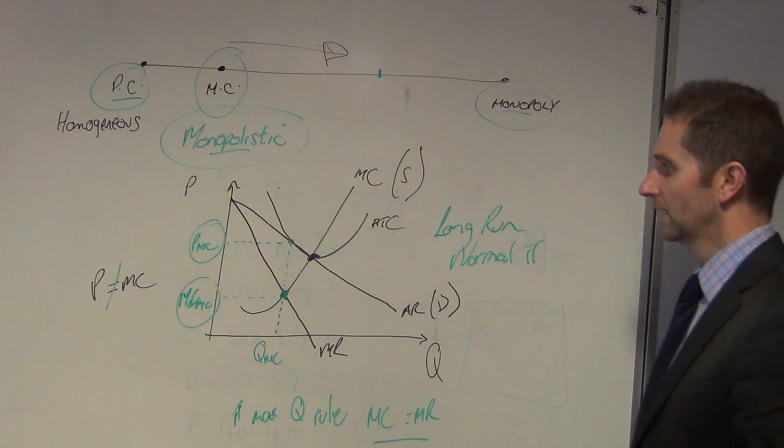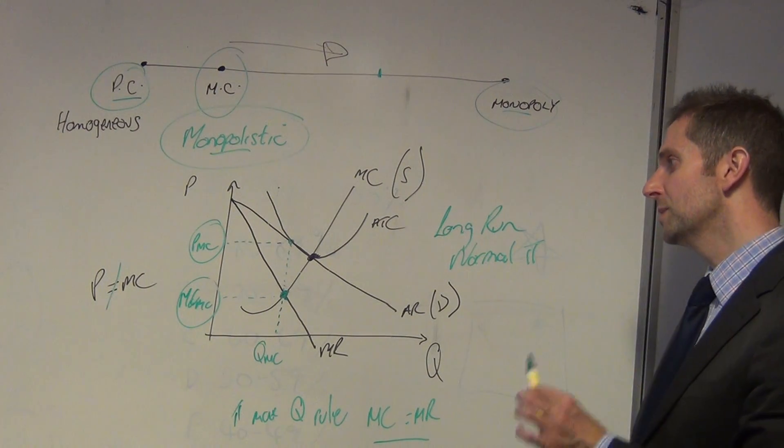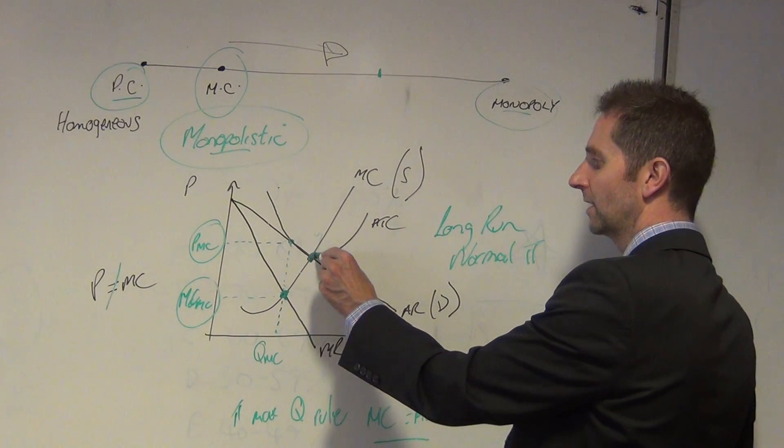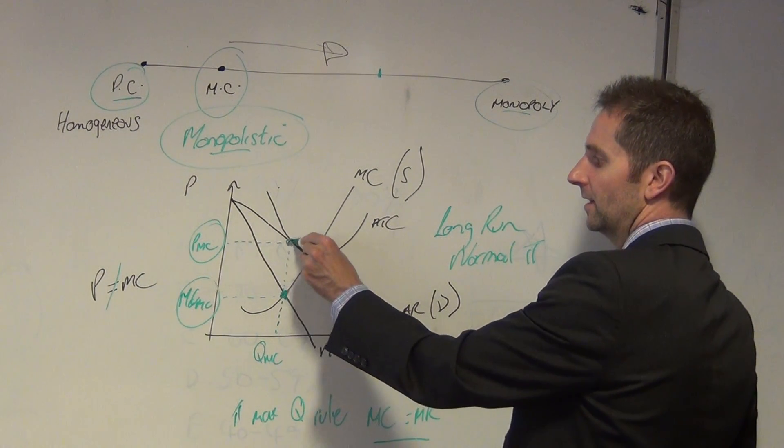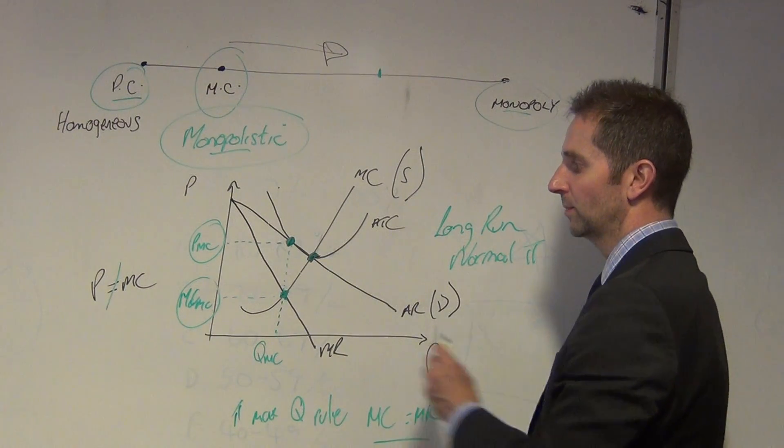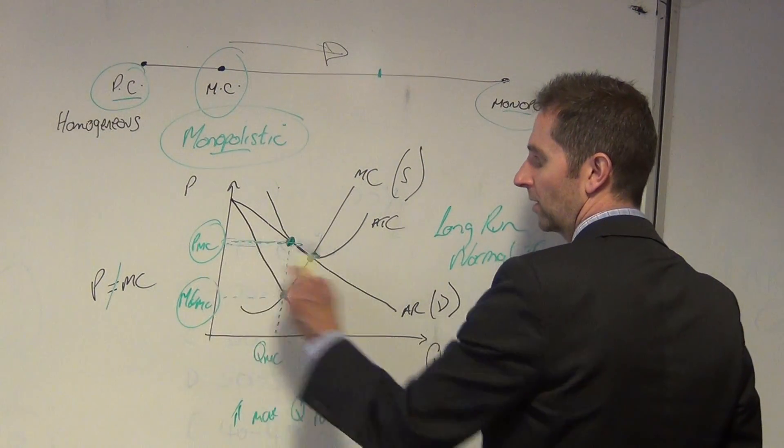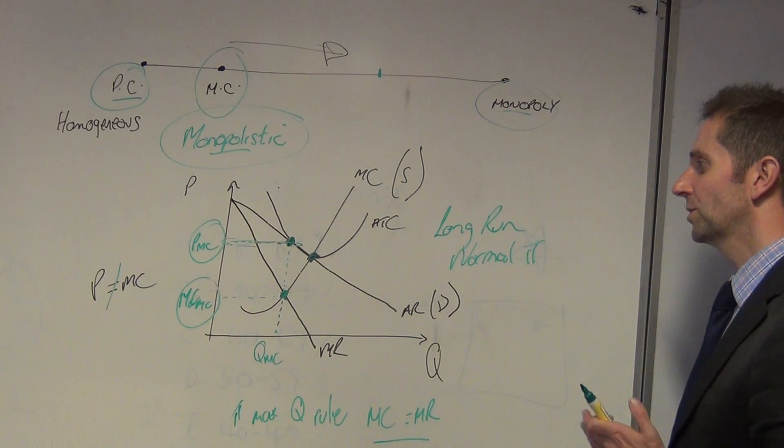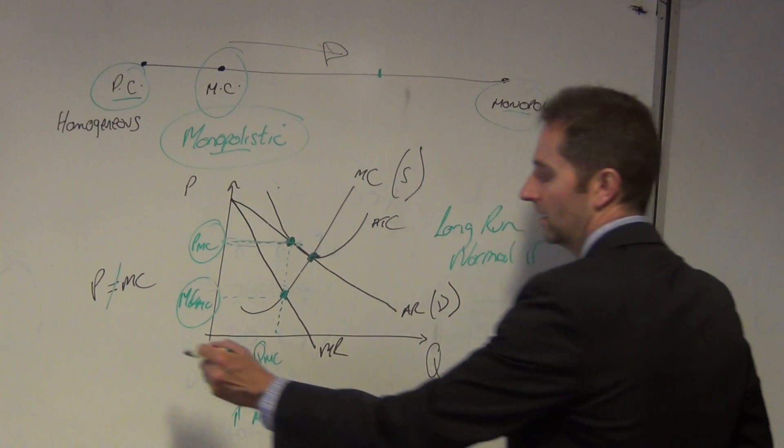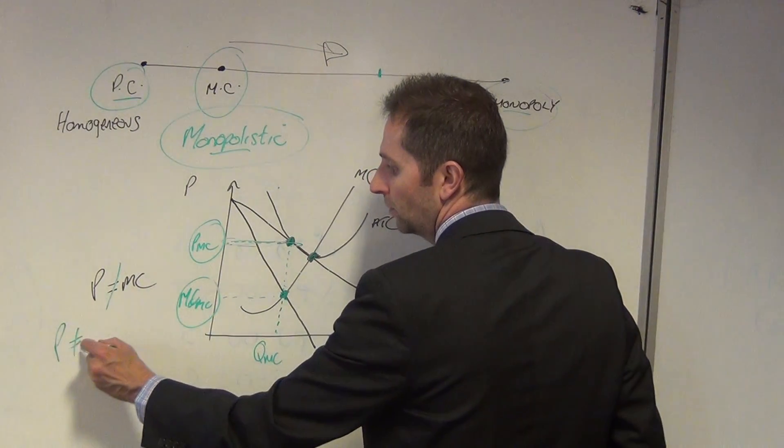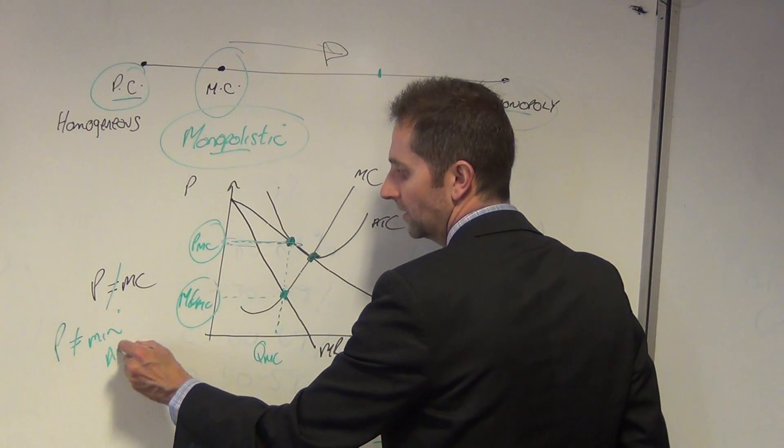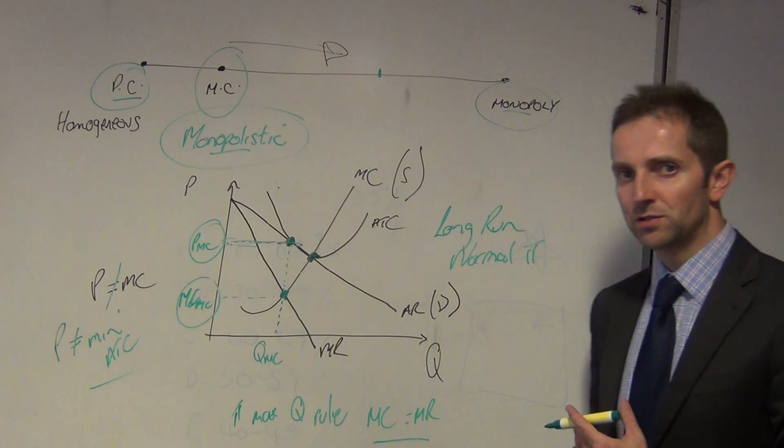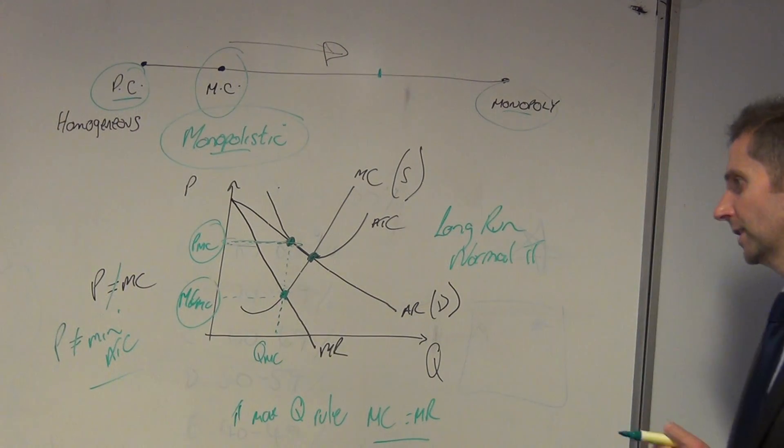Is it productively efficient? Are we producing at the minimum point on the average total cost curve? Quite clearly not. There's the minimum point, there's our cost. Because our cost is the same as our price here, so we're making normal profits in that respect in the long run. And as a consequence of that, P does not equal min ATC. And so this firm is clearly neither productively efficient nor allocatively efficient.